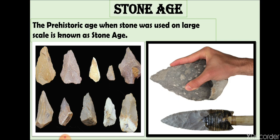The prehistoric period when people used stone on a large scale is known as the Stone Age. Why is it called the Stone Age? Because at that time people were using stone as their tools and weapons for everything. Like today we have scissors, screwdrivers, and knives for daily work, they had only stones, wood, and bones for making their tools. That is why that period is recognized as the Stone Age.